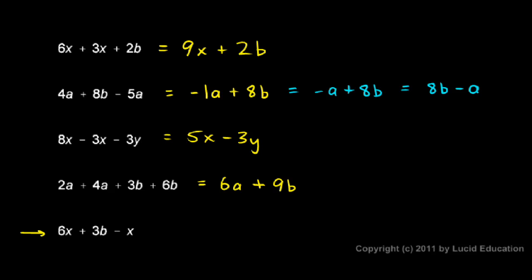In this one: 6x + 3b - x. Well, here is an x term and another x term. And this one is negative. So I have 6x minus x. That gives me 5x. And then I still have this plus 3b. So 5x + 3b is my answer.